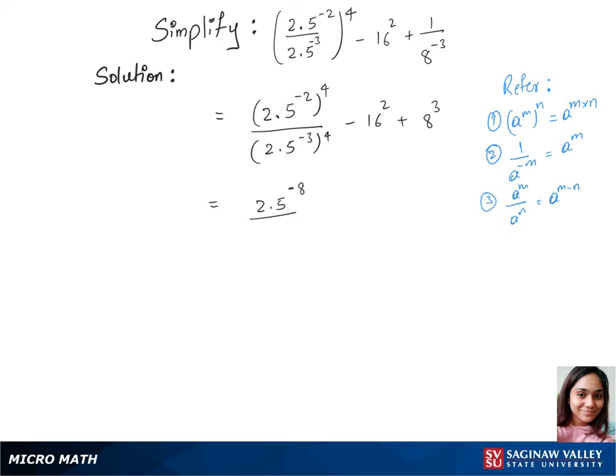We just used rule 1 for that, minus 16 square plus 8 cube. In our next step we are using rule 3 for this and we'll write our base 2.5 to the power minus 8 plus 12, minus 16 square plus 8 cube.